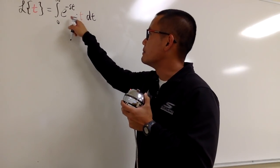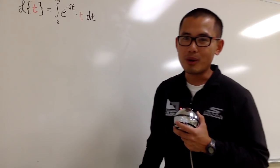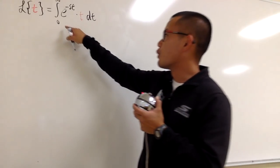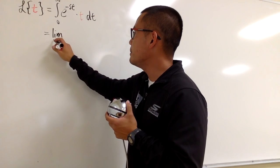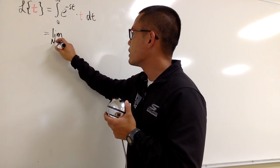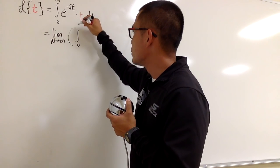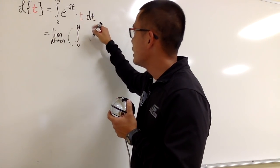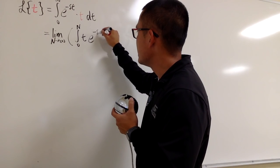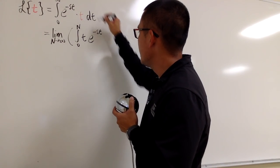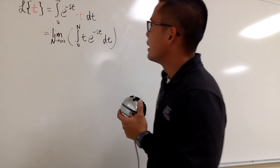Now, we have t times e to the negative st. We have to use integration by parts. And of course, this is an improper integral, so I'm going to first write this down as the limit as n goes to infinity, and then we will have the integral from 0 to n. Let me put the t first in the front, and then we have e to the negative st, and then dt.